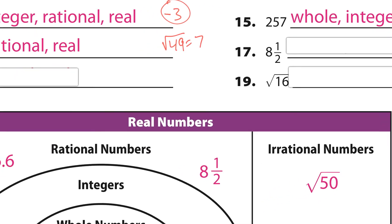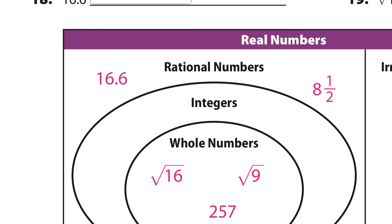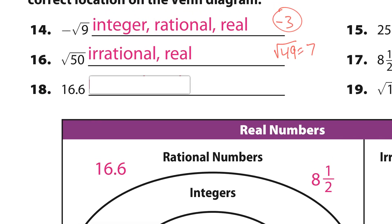Number 17: eight and a half. Eight and a half is a rational number, so it's rational and real. It's not an integer or a whole number. Rational and real.